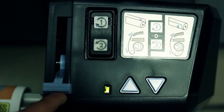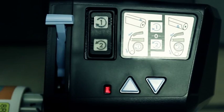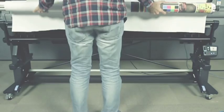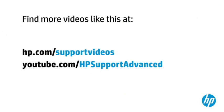Unlock the take-up reel by pushing its lever to the uppermost position. Remove the take-up spindle. You can find additional helpful videos at hp.com/support videos and on our YouTube channel.